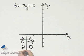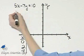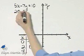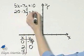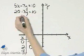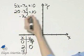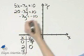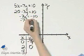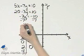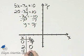Let's let x be, say, 4. If x is 4, I'll have 20 minus 7y is 10. Subtract 20 from both sides, and I'll have 10 minus 20 or negative 10. Then divide both sides by negative 7, and I'll have y is 10 sevens.